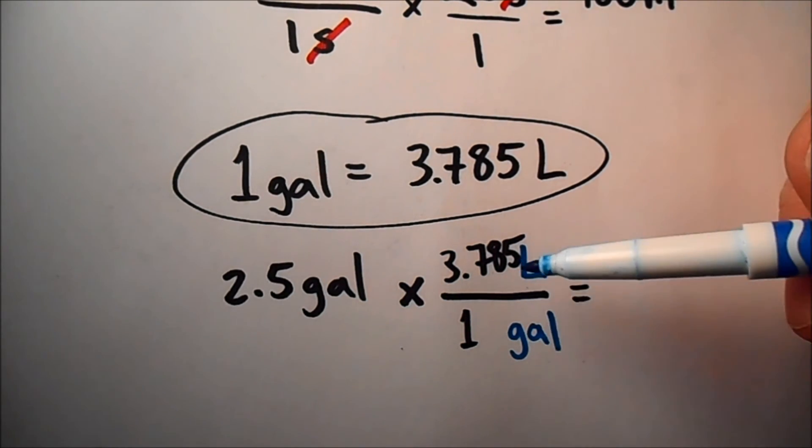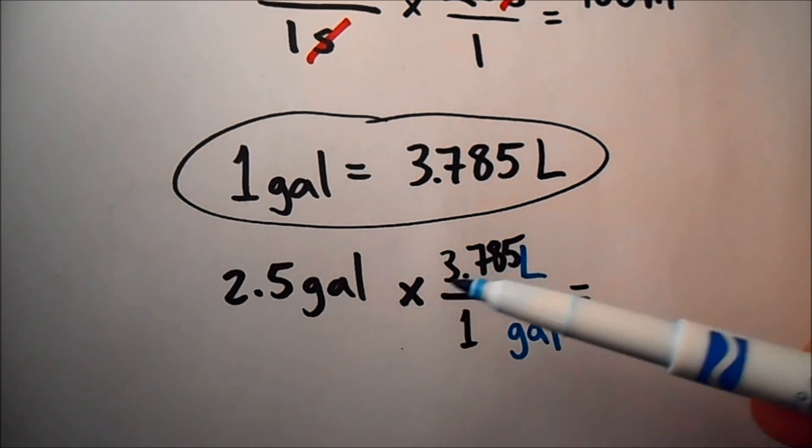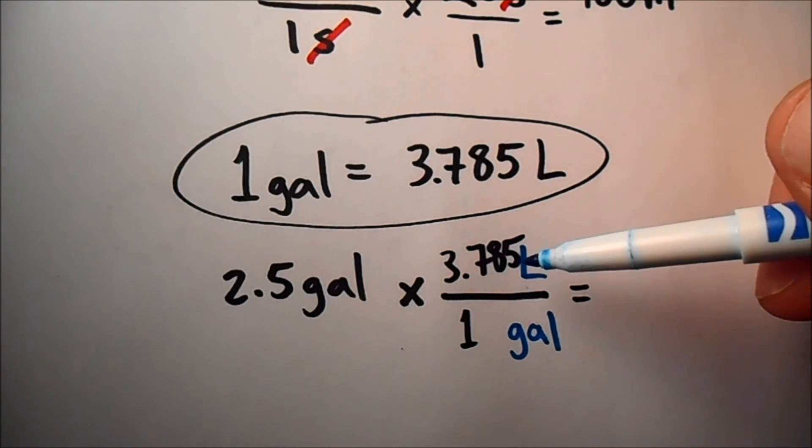But with this conversion factor, if we just blindly follow the sig fig rules we've gotten used to, we might want to think this 1 has just 1 sig fig and so our answer needs to have 1 sig fig. That's not true though. This 1 actually has infinite sig figs. This 1 is a definition. As far as we are defining 1 gallon in this problem, it's equal to a certain amount of liters, but we're saying exactly 1 gallon is equal to this many liters.